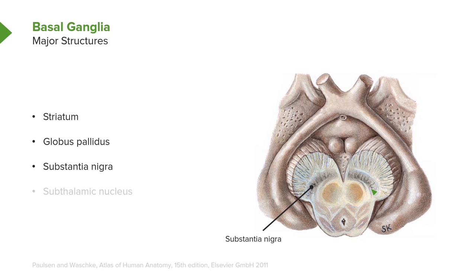The last member of the basal ganglia is the subthalamic nucleus. However, that is not shown.